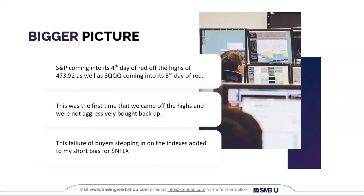For a bigger picture, the S&P was coming into its fourth red day off the highs, and the same for the QQQs coming into their third red day. This was a little bit of a changing character, as this was the first time we were not aggressively bought back up. For weeks prior, when we gapped down, we saw immediate buying on the open. This change of character was adding to my short bias for Netflix.